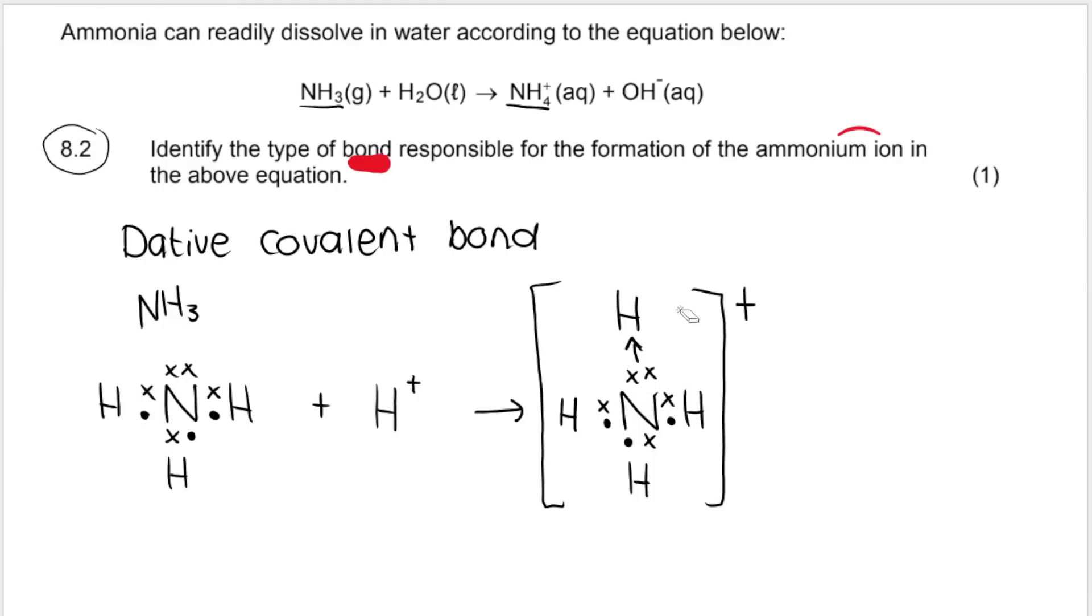And then it forms the ammonium ion. And this arrow just indicates that both of these electrons, this lone pair, is shared with the hydrogen over there. And overall, it has a positive charge. You use a square bracket. Overall, positive charge. They don't ask for it in this question, but they can in an exam.